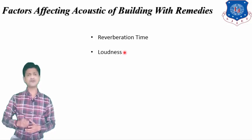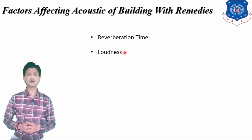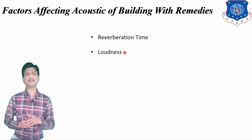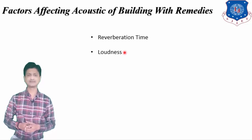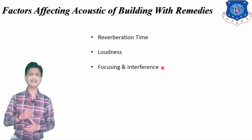The next factor is loudness. Due to excess sound absorbing material, loudness may get reduced. Uniform distribution of sound is important in a hall. By constructing low ceilings and by using loudspeakers, we can manage the loudness in a hall.